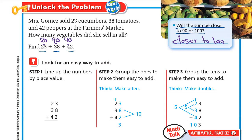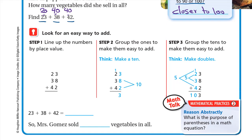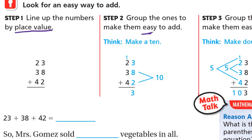We need to add 23 plus 38 plus 42 using the commutative and associative properties. Step one: line up the numbers by place value — ones under ones, tens under tens. Step two: group the ones to make them easy to add. In the ones we have 3, 8, and 2. Think: make a 10. Start with 8 plus 2, because 8 plus 2 equals 10.